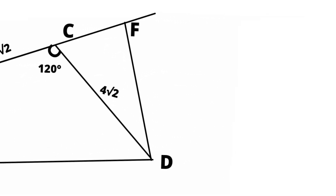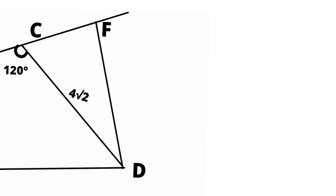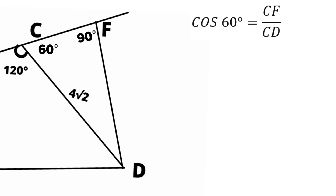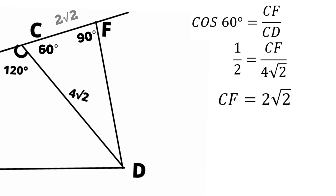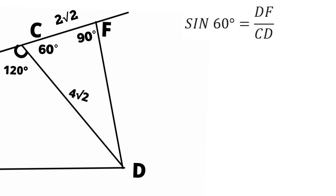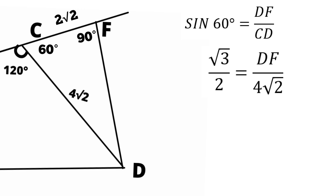In the right-angled triangle DFC, angle C equals 60 degrees because angle DCB equals 120 degrees. Using trigonometry to find CF and DF: cos 60 degrees equals CF divided by CD, so one half equals CF divided by 4 root 2, giving CF equals 2 root 2 cm. For DF, sin 60 degrees equals DF divided by CD, so root 3 over 2 equals DF divided by 4 root 2, giving DF equals 2 root 6 cm.